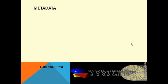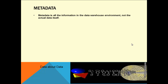That common language is metadata. Metadata is all the information in the data warehouse environment — not the actual data itself. Think of a library: the books are the actual data, but the index or catalog at the front office is the metadata, telling you books are listed alphabetically or by author. Metadata is akin to an encyclopedia of the data warehouse — similar to Wikipedia — and comes in a variety of shapes and forms.